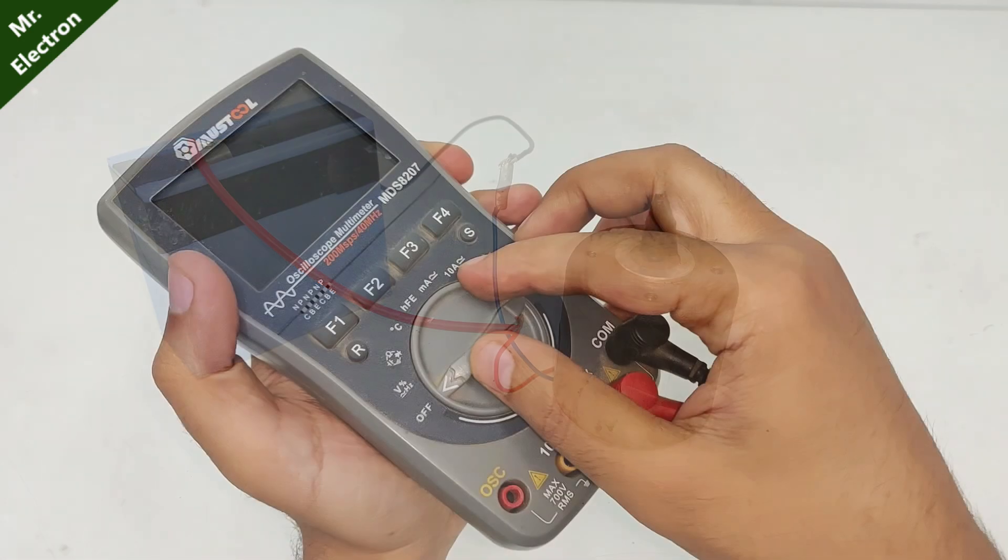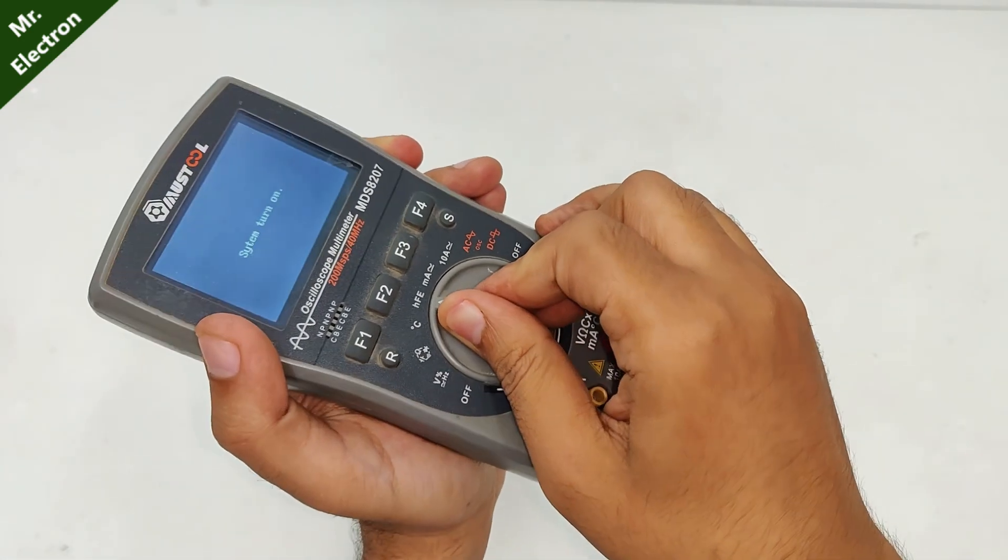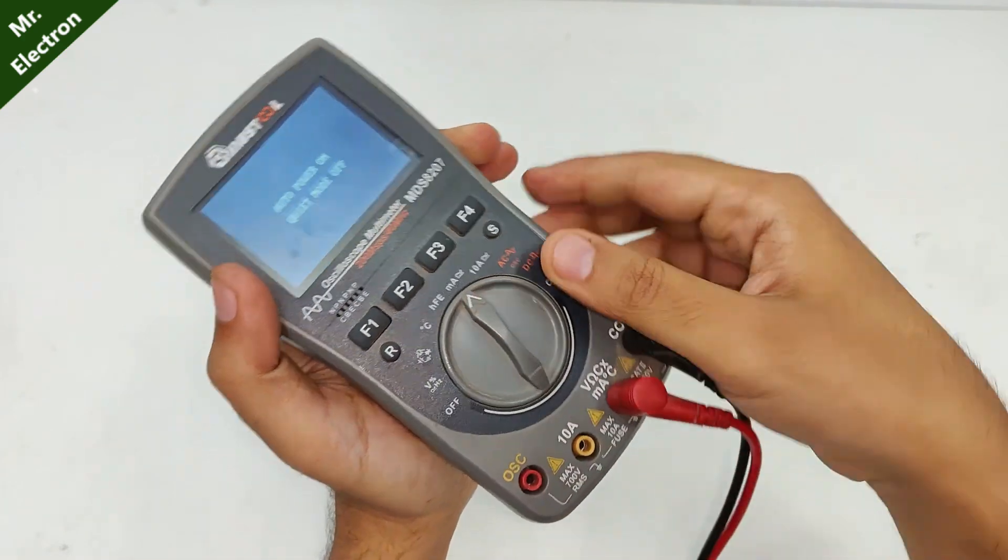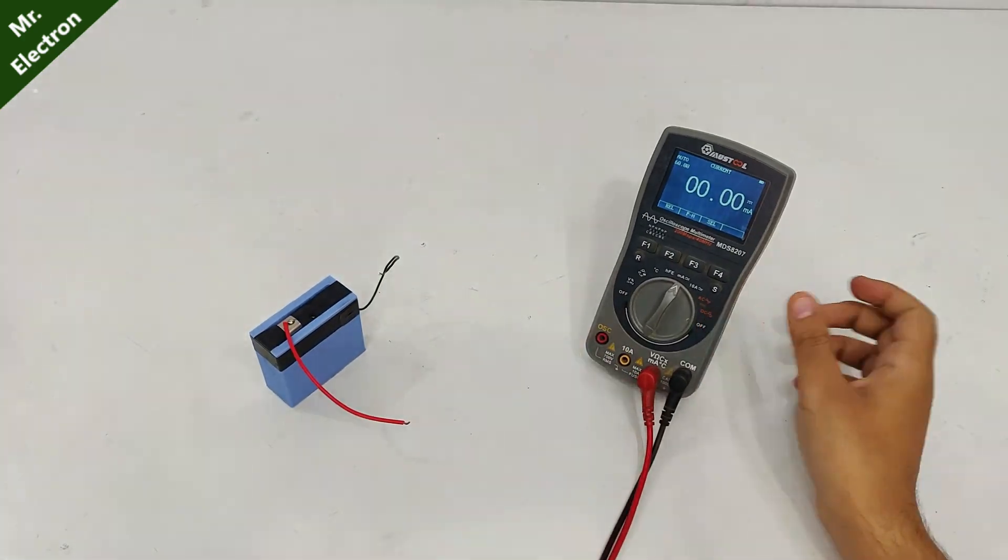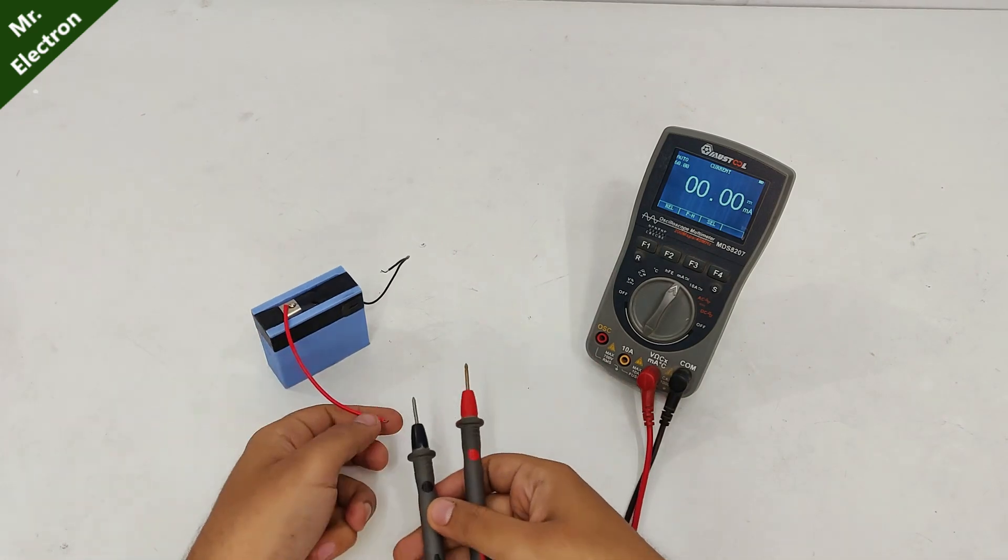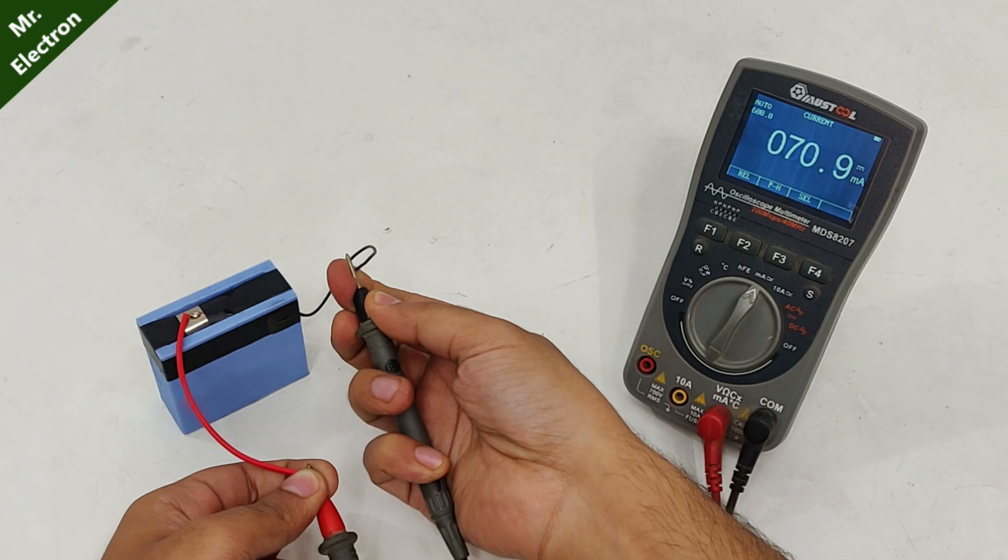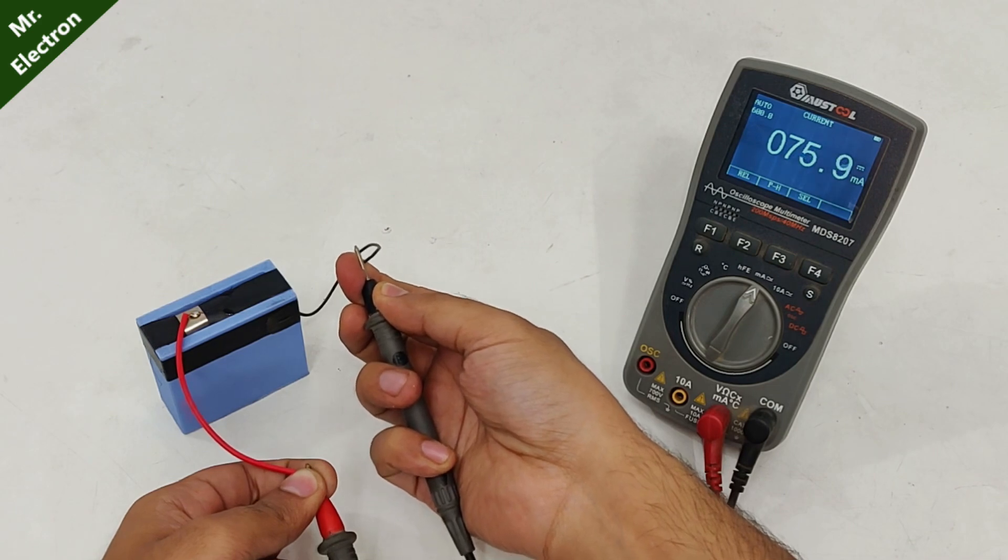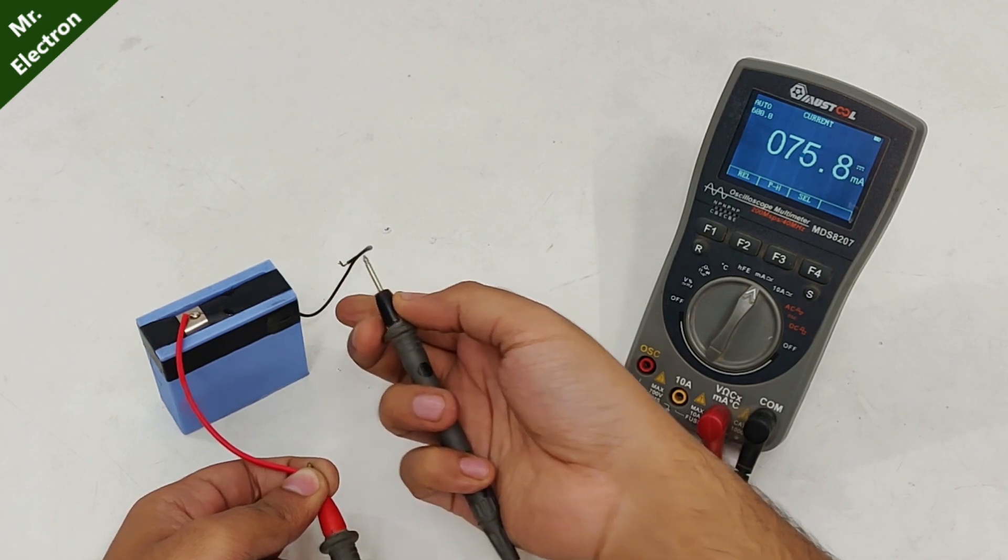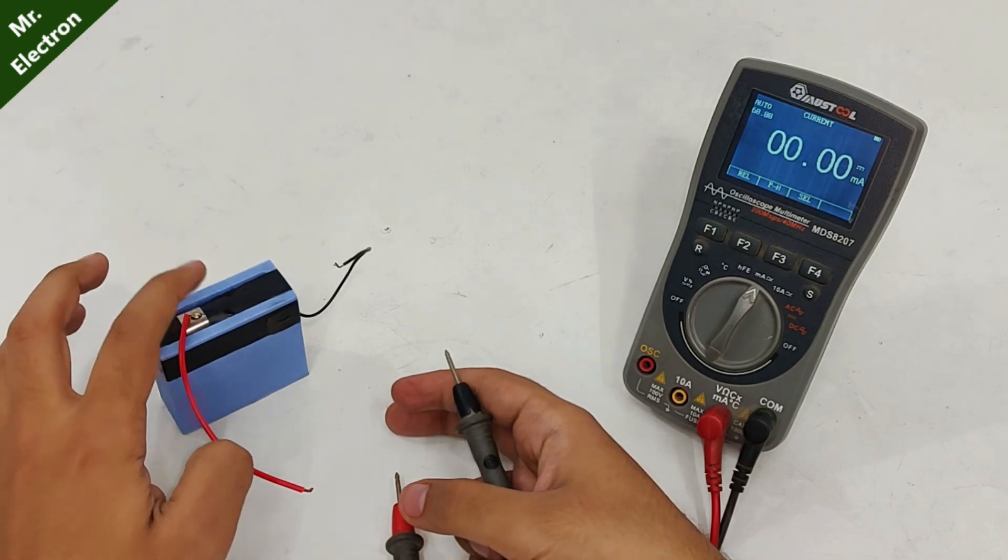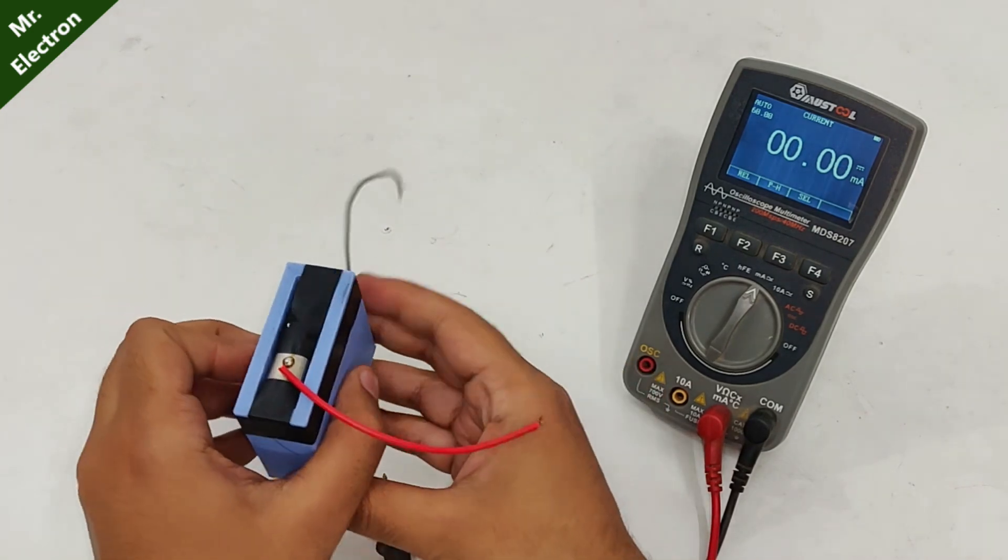Let's measure the amperes. For ampere measurement, moving the pointer to milliamperes mode. And here we have around 75 milliamperes. It should be a little more, not sure whether milliamps are less.